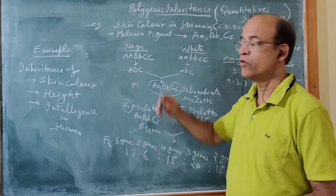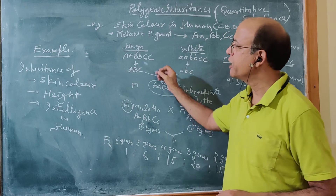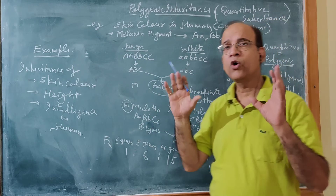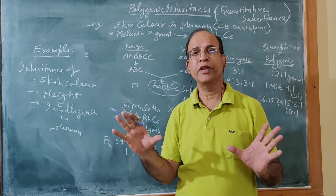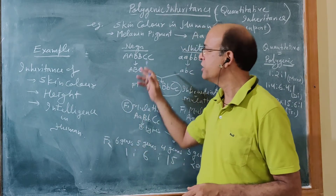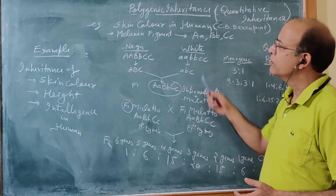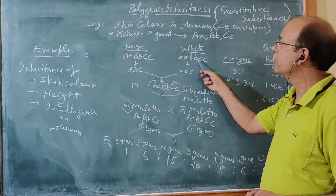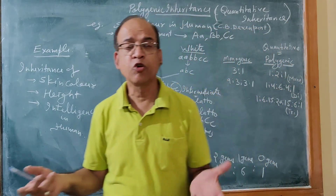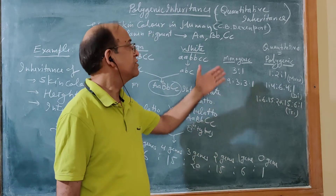In the Negro, where maximum pigment is present, the genotype is AABBCC — all dominant alleles — so maximum pigment is produced. Whereas in the white population, the genotype is aabbcc — all recessive alleles — so there is no production of melanin pigment, which is why they are white.